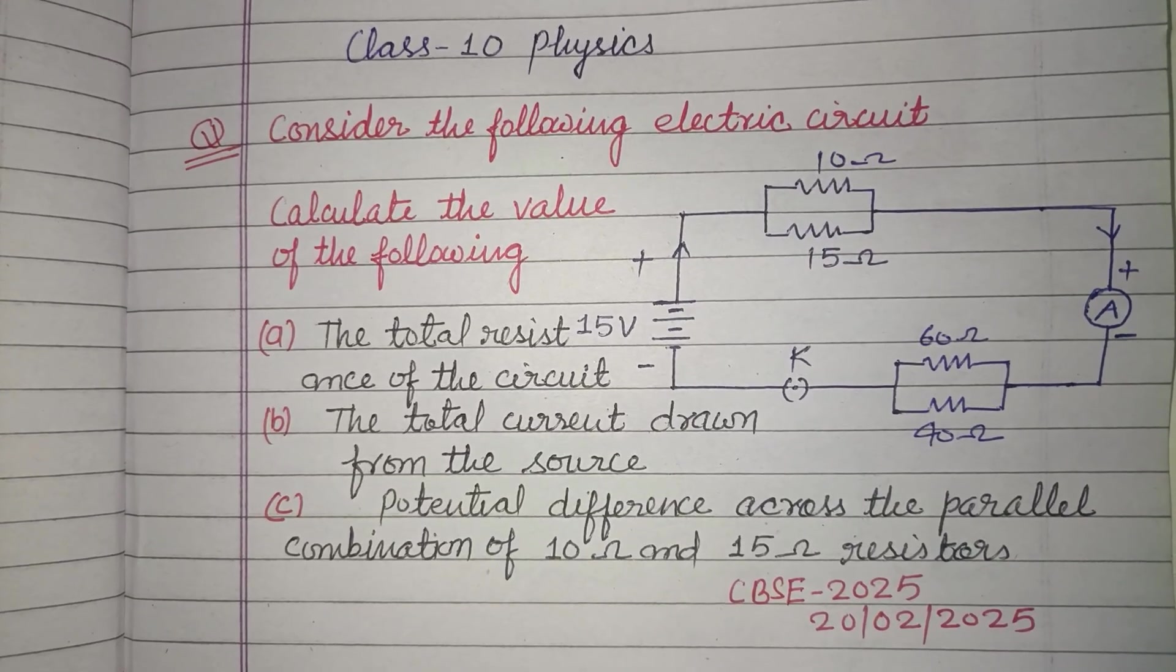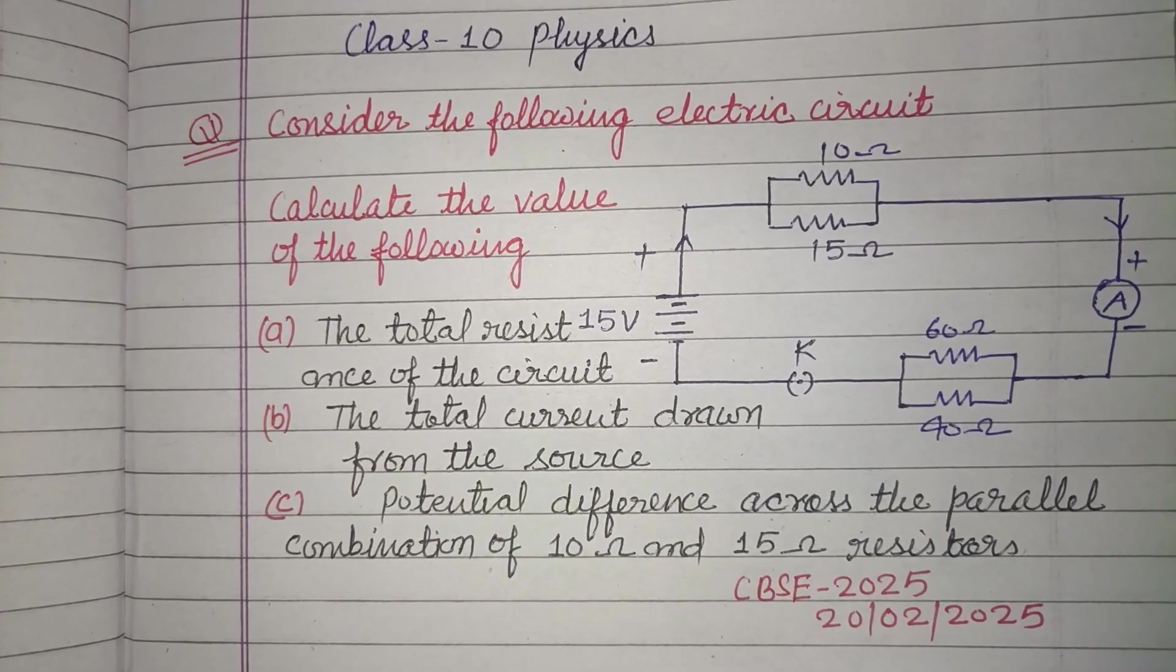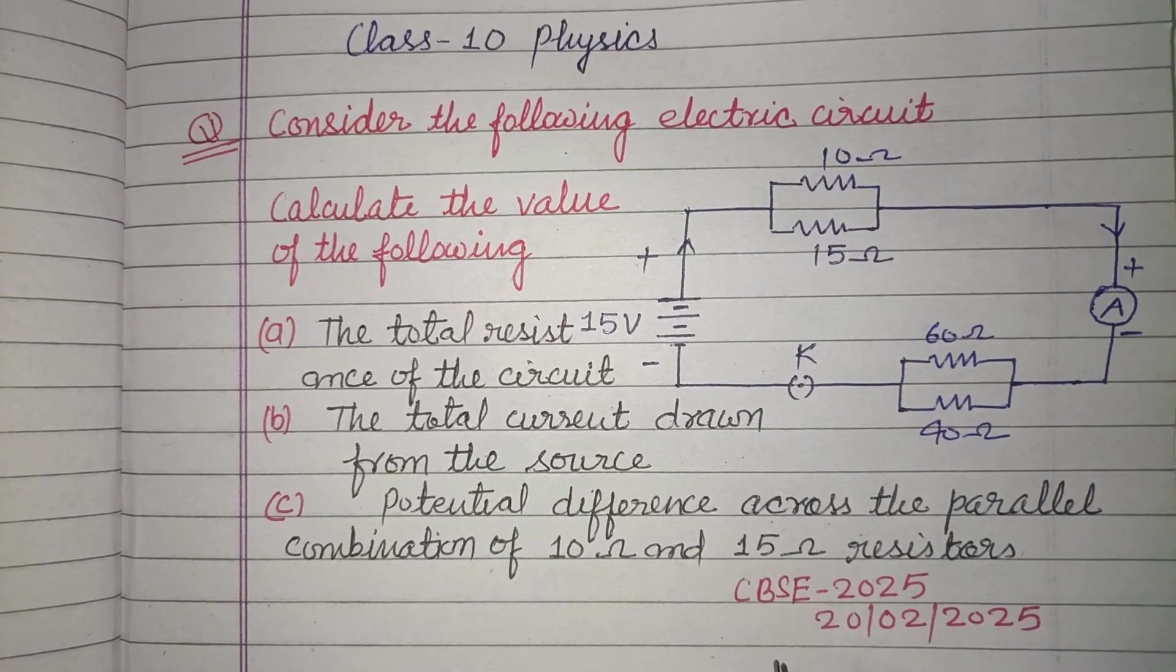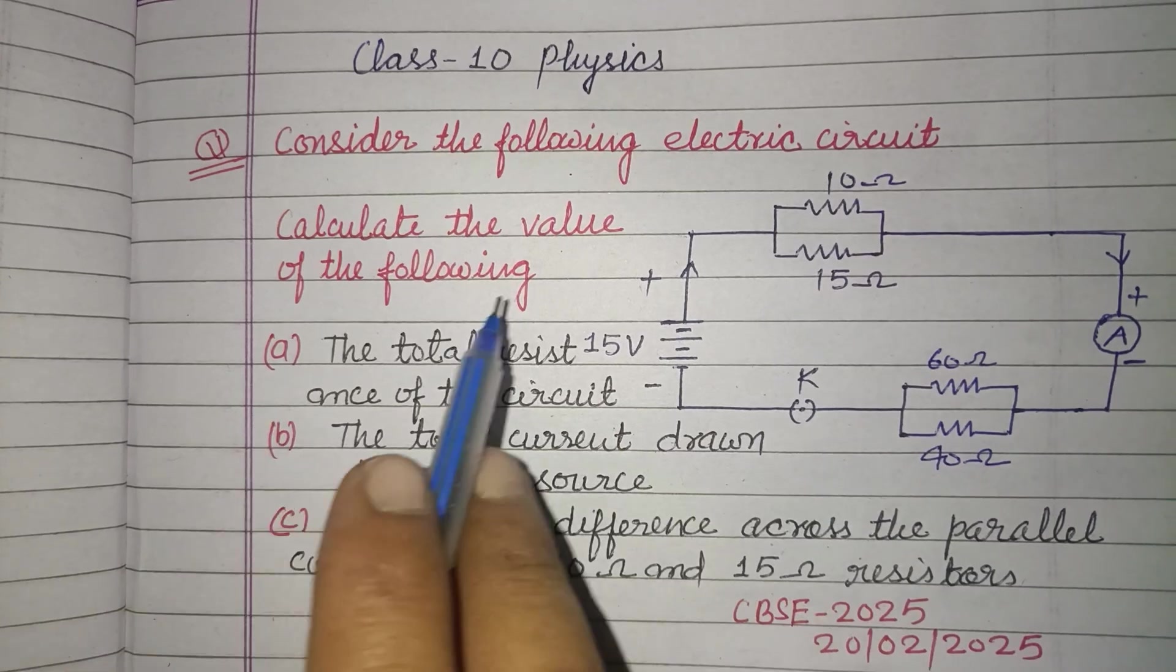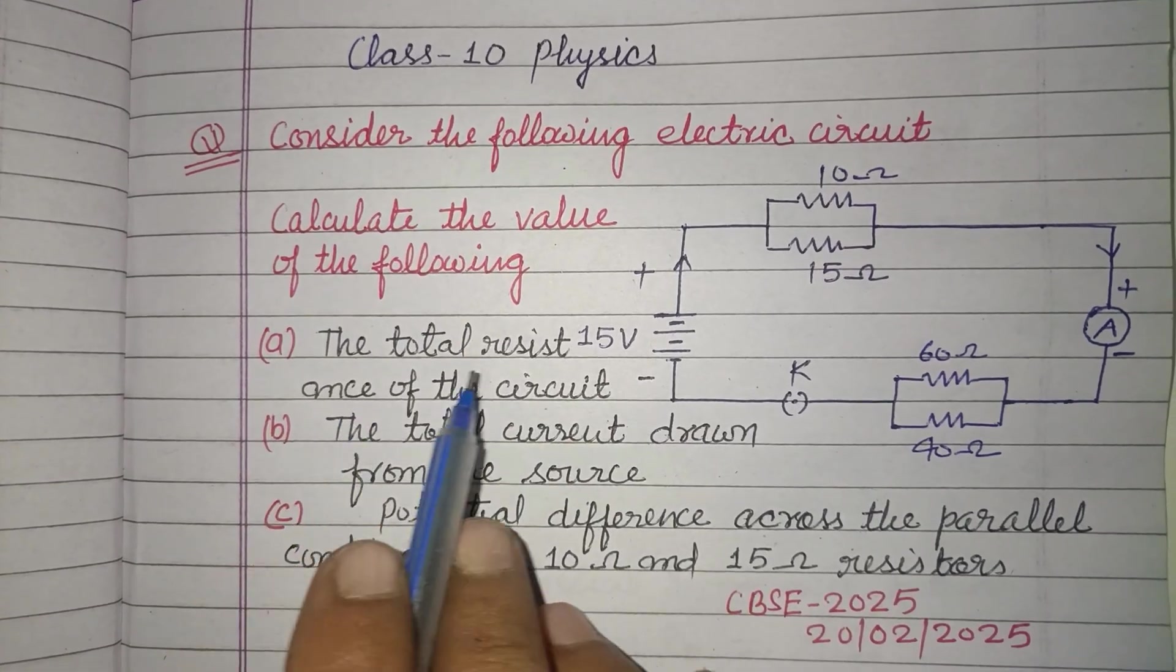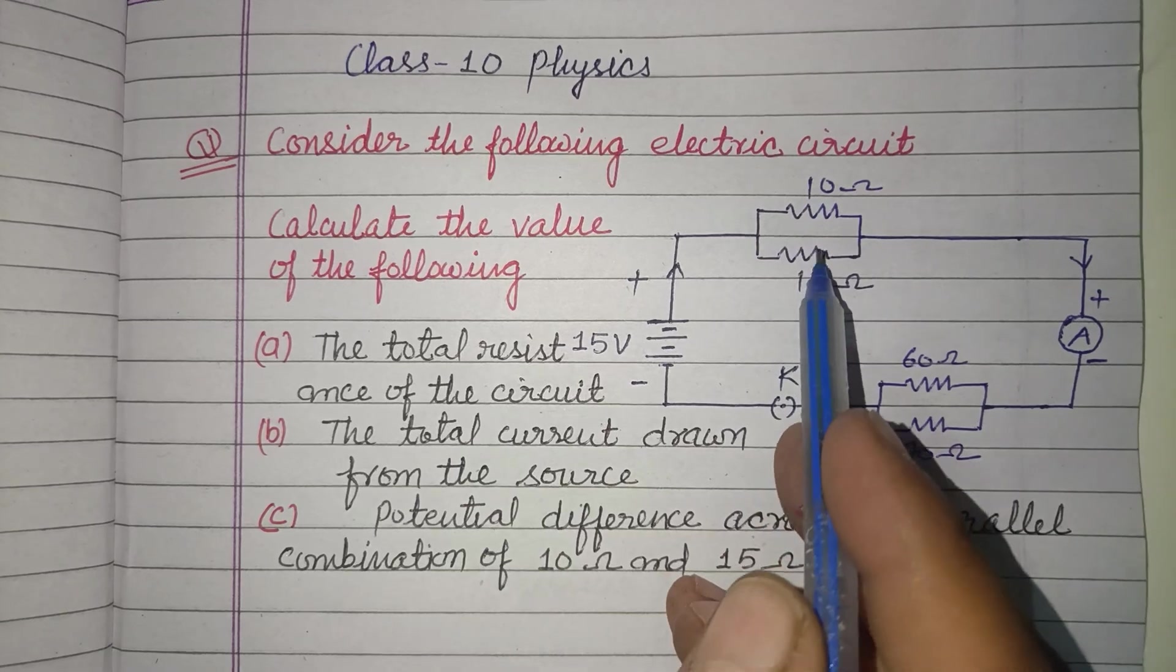Hello viewers, warm welcome to this YouTube channel. Question from CBSE board exam 2025, class 10. Consider the following electric circuit, calculate the value of the following: the total resistance of the circuit. So students, here are two groups of resistances.